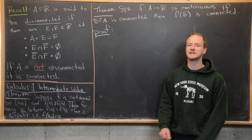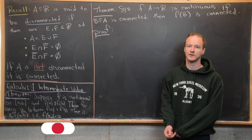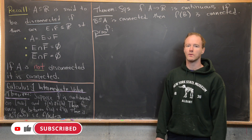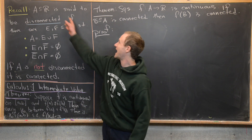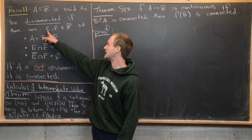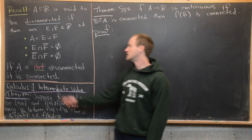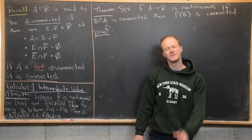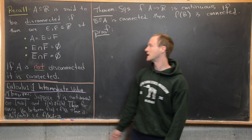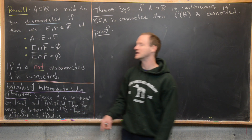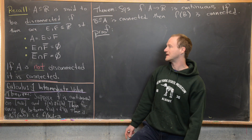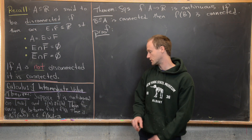We're continuing to look at the interaction of continuous functions with the topology of the real line, and in this video we're going to look at connected sets. A set A of the real numbers is said to be disconnected if there exist E and F, also subsets of the real numbers, such that A is the disjoint union of E and F, and E intersected with the closure of F is empty, and the closure of E intersected with F is also empty.